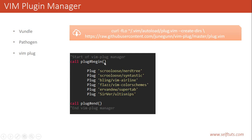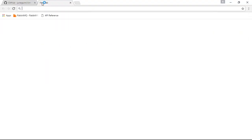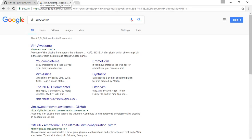Inside the plug#begin and plug#end area, we have to use a syntax for each plugin. We write Plug followed by the name of the plugin. The plugin name is divided into two parts: the first is the GitHub username and the second is the repository name for that user. You can find plugins according to your need by going to the website vimawesome.com.